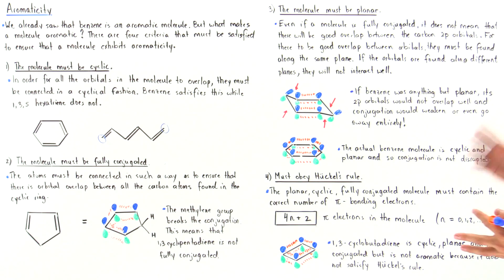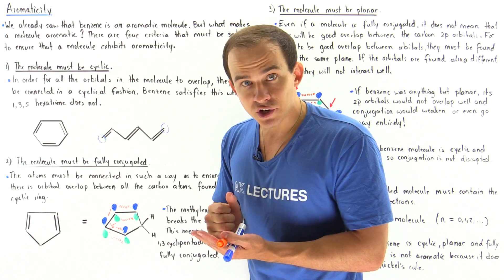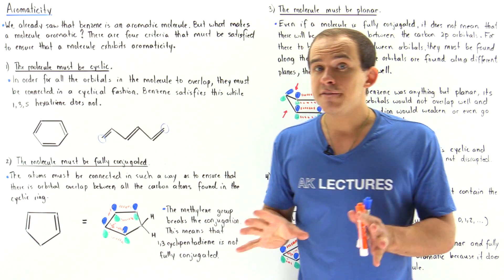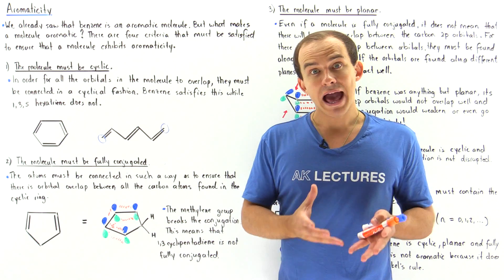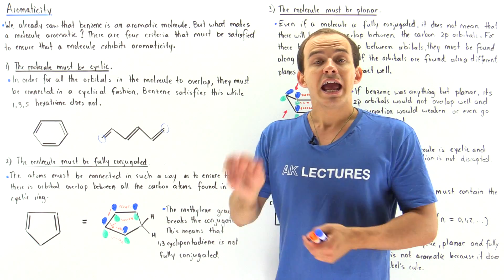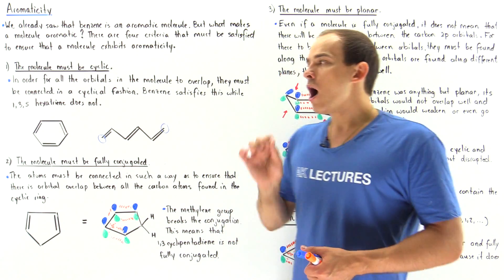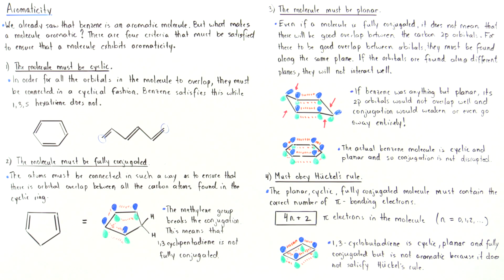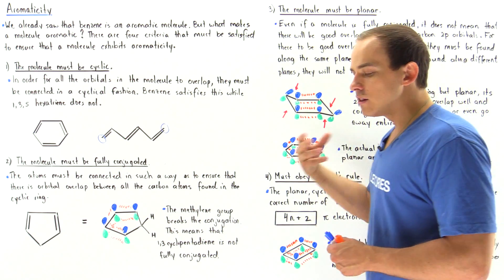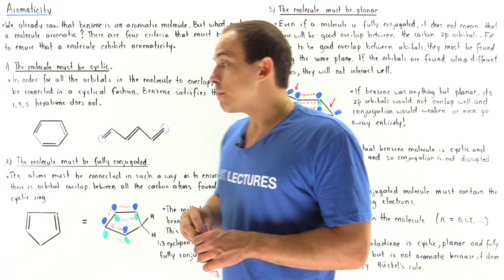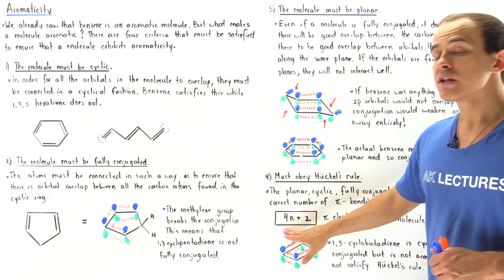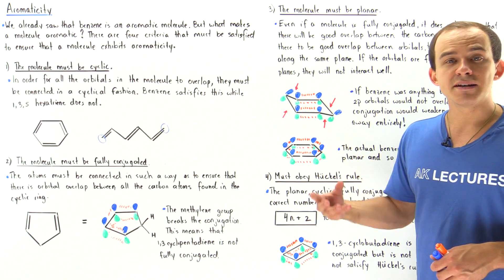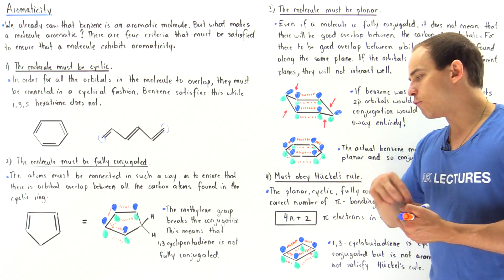So the molecule must be cyclic, planar, and fully conjugated. But even if all these criteria are satisfied, the molecule can still be non-aromatic, because it must also satisfy a fourth condition known as Hückel's Rule. Hückel's Rule states that the number of pi electrons in the molecule must equal 4n + 2, where n can equal 0, 1, 2, 3, 4, 5, 6, and so forth.